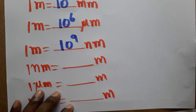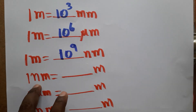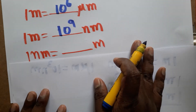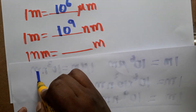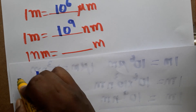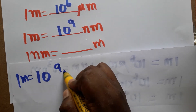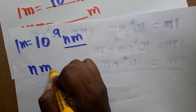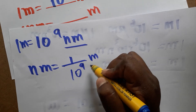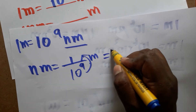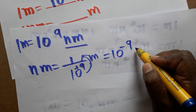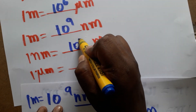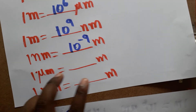Now the reverse way: 1 nanometer is equal to how many meters? We know 1 meter is 10 power 9 nanometers. So 1 nanometer equals 1 divided by 10 power 9 meters. Bringing it from the denominator to the numerator, the exponent changes sign, so 1 nanometer is equal to 10 power minus 9 meters.